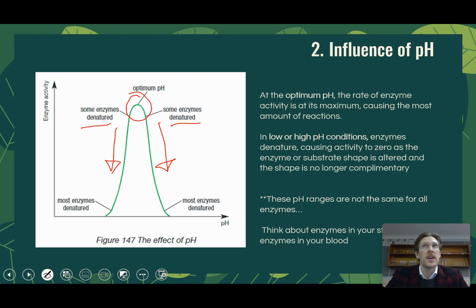The key difference between temperature and pH is this: with temperature, when it is cooled down, the rate of reaction merely slows. However, with pH, if we make the environment too acidic or too basic on either side, the enzymes permanently change their active site shape, meaning they can no longer function at all.